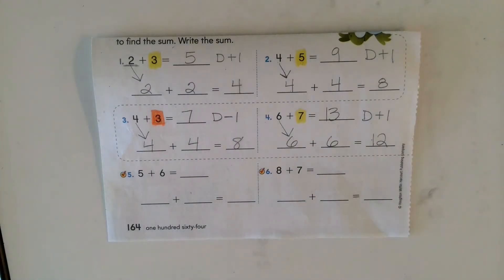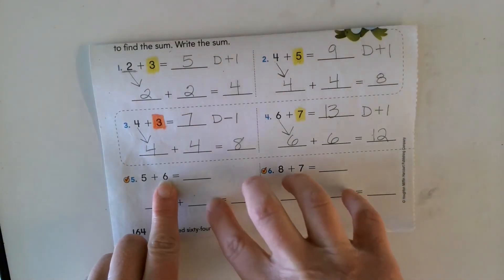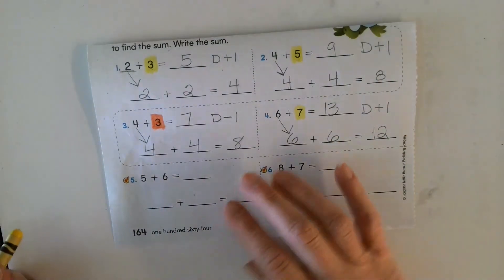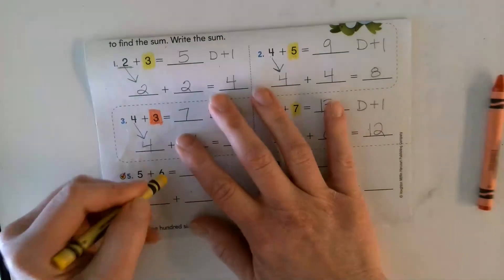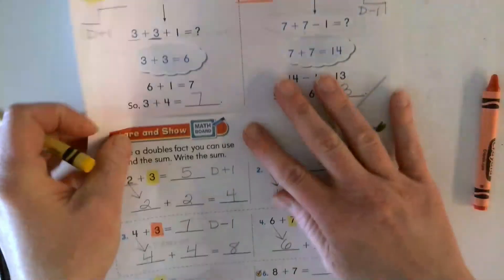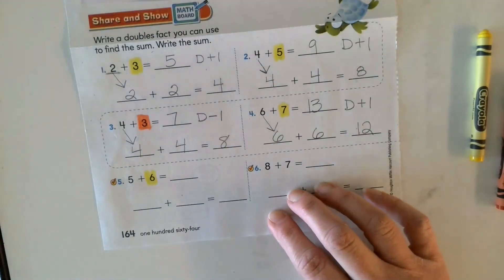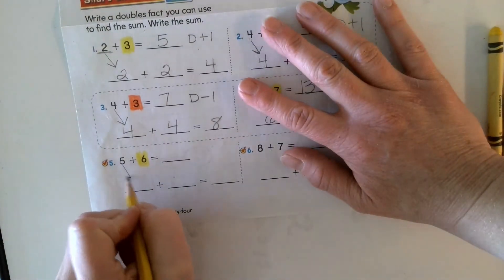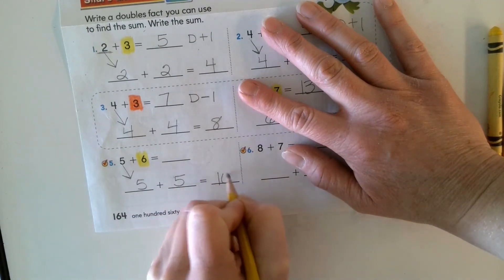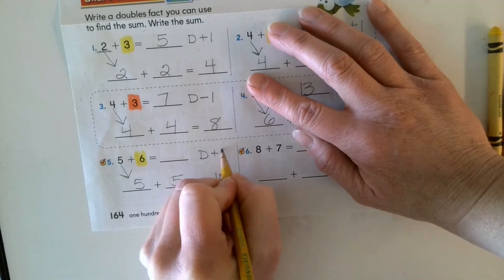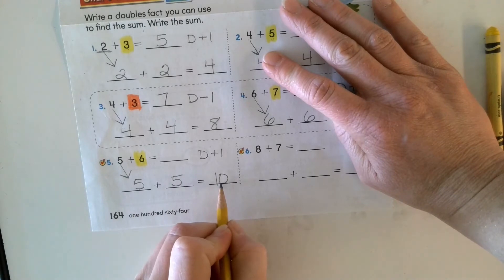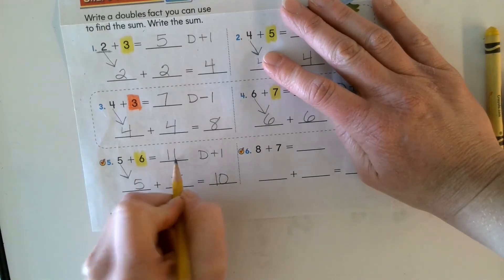On number five I have five and six. The second addend is one higher, so this is going to be doubles plus one. Highlight that six in yellow. I bring down my five, so five plus five equals ten. This is a doubles plus one, so I think five plus five is ten, plus one is eleven.